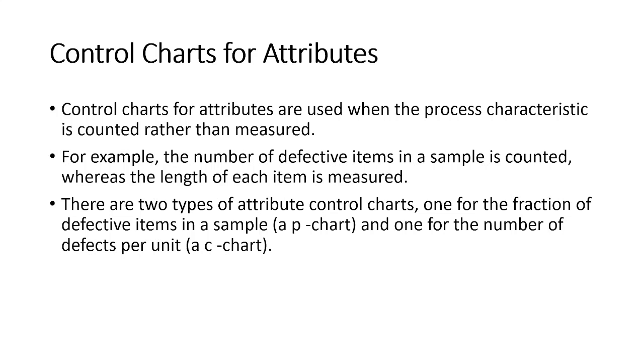First of all, let us see what are the control charts for attributes. It is when you have to count the characteristics of the process rather than measuring it. For example, in a sample, how many items were defective can be counted, but the length of each item cannot be counted, it can be measured.